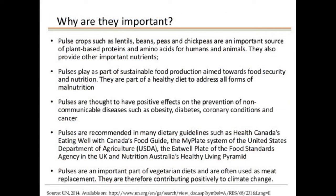Pulses are an important source in our diet. Pulse crops like lentils, beans, peas and chickpeas are important sources of plant-based proteins and amino acids for humans as well as animals. Pulses play a part in sustainable food production aimed towards food security and nutrition. They are part of a healthy diet and help overcome malnutrition problems.